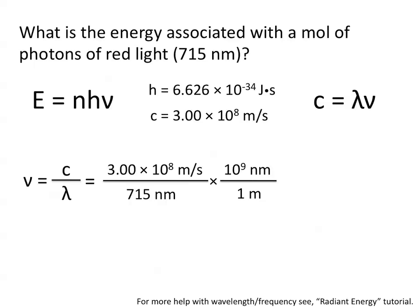Alternatively, you could have written one nanometer for every 10 to the negative ninth meters. This allows us to cancel out units of nanometers and meters and leaves us in units of inverse seconds, which is the units for frequency. So, 715 nanometer light has a frequency of 4.2 times 10 to the 14th inverse seconds.